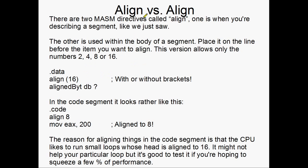There are actually two align directives. The one we've just been through is for aligning segments. You can also use what looks the same, but it actually means something different, in the body of your segment. In the body of the segment, if you've got align and then a number, what you're doing is aligning the very next thing. This is a different directive and it doesn't take the same operands — the one in the body can only be aligned to 2, 4, 8, or 16. You can't go all the way up to 4096 within the body of a segment. Also, you don't need brackets for align in the body of a segment.